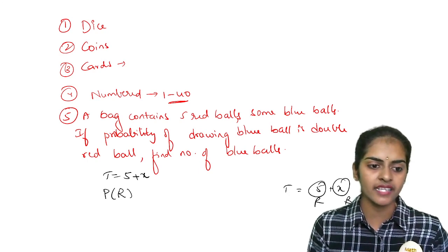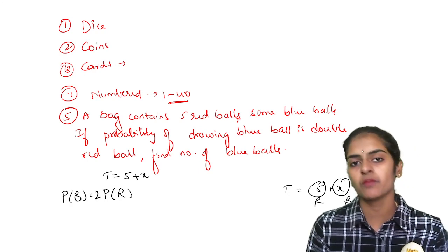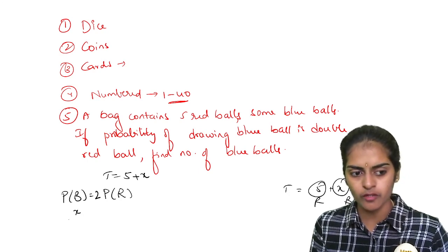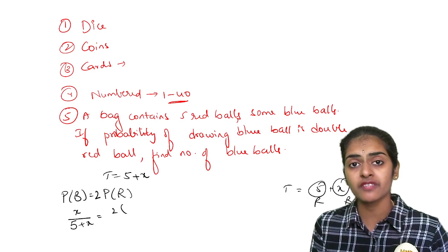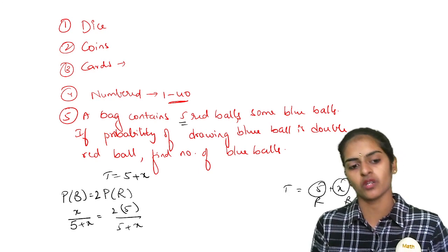See here, what are they giving you? They are telling you probability of blue ball is double the probability, 2 times the probability of red ball. Probability of blue ball is number of blue balls by total number, which is 2 times probability of red balls, which is number of red balls given as 5 divided by total number of balls.